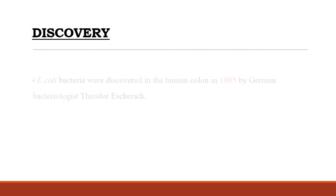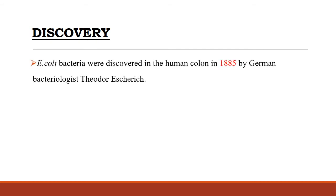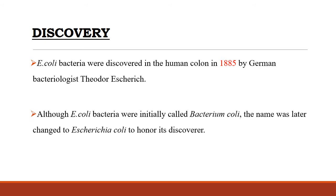E. coli were discovered by the German-Austrian pediatrician Dr. Theodor Escherich in 1885. He conducted examination of neonate meconium and feces of infants with the aim to gain insight into the development of intestinal flora. He observed slender short rods of the size 2 micrometers in length and 0.2 micrometers in width, which he named Bacterium coli commune because it is found in the colon. These bacteria grew as white non-liquefying colonies and have fermentative ability, causing milk to be clotted as a result of acid formation. Later in 1919, the bacterium was renamed by Castellani and Chalmers in honor of its discoverer and became Escherichia coli.